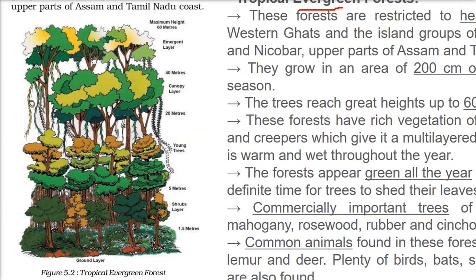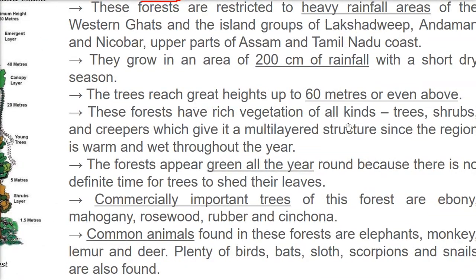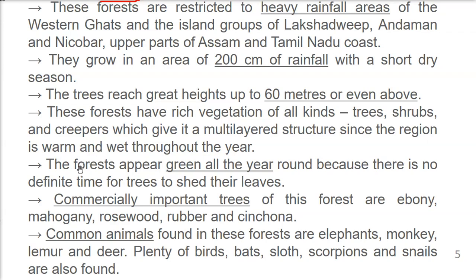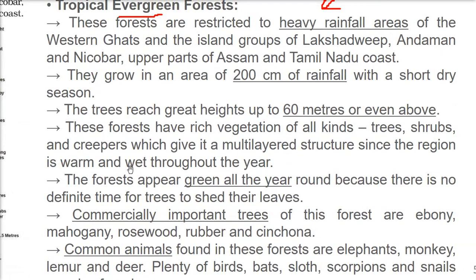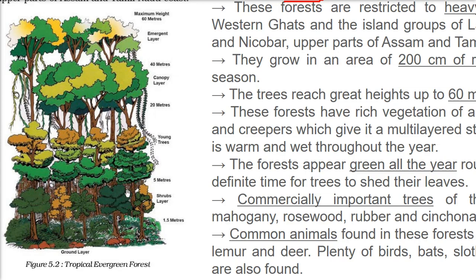The trees in tropical evergreen forests reach great heights — up to 60 meters. There is a multi-layered structure: shrub layer at 1.5 meters, small plants at 5 meters, young trees at 20 meters, canopy layer at 40 meters where sunlight can't even penetrate, and emergent layers at 60 meters. The region is warm and wet throughout the year, supporting small, middle, and large varieties.